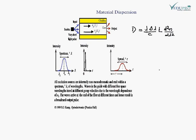Material dispersion occurs due to the spectral width of the light source. As shown in the diagram, the intensity and width are visible here. When two different wavelengths of light travel together — lambda 1 as the longer wavelength and lambda 2 as the shorter wavelength — the longer wavelength travels faster. The gap between them represents the spectral width, delta lambda.